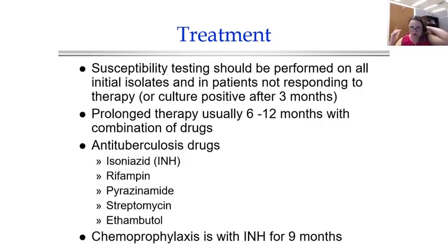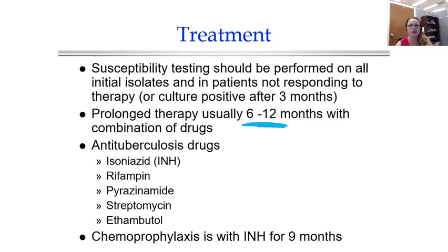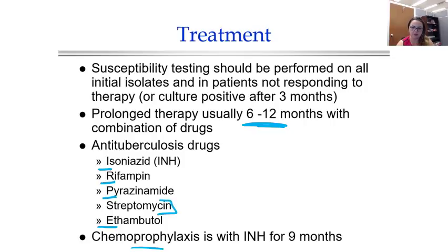I'm not going to talk much about treatment — this will be covered in much more detail later. What I'll say is that it is usually a very long treatment course, six to twelve months. Because treatment resistance is so important, we often treat with a combination of drugs. I use the acronym TB needs to be RIPE: the drugs are rifampin, isoniazid, pyrazinamide, and ethambutol. In some cases they'll add in streptomycin, and you can do chemoprophylaxis, but that's still going to be for a long time.